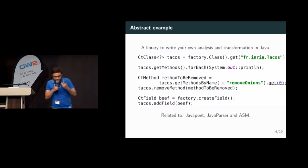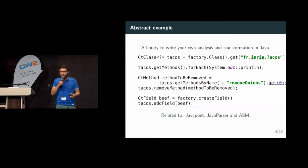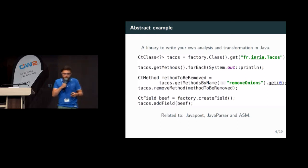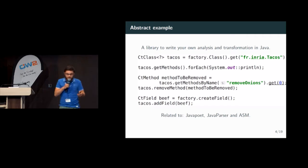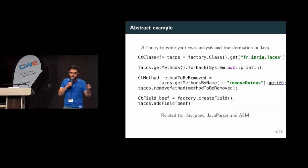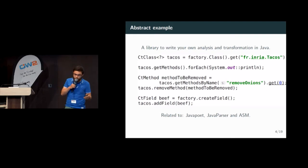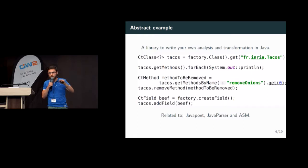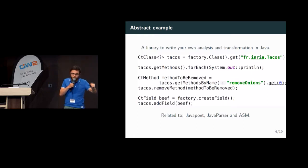In the ecosystem, we can find Java Poet, which is a library to write and generate Java source files. Java Parser is probably the nearest project to Spoon because it also analyzes and transforms code, but its transformation potential is weaker than Spoon's. ASM is similar to Spoon but works at the bytecode level, and the transformations are really hard to write.